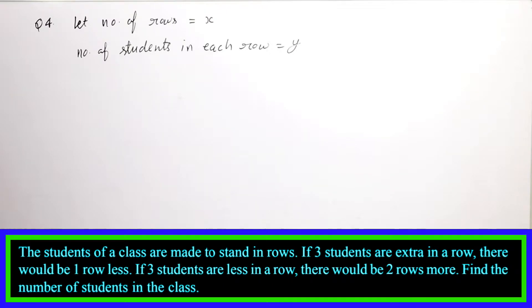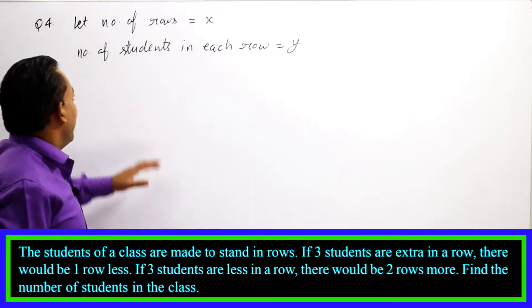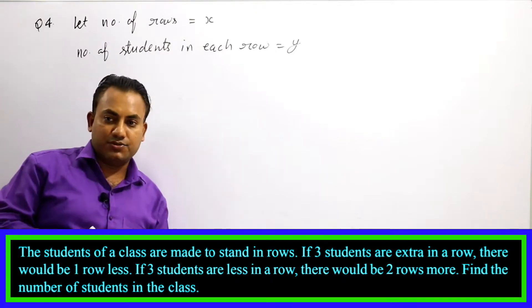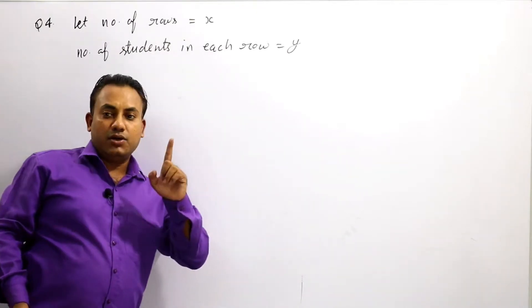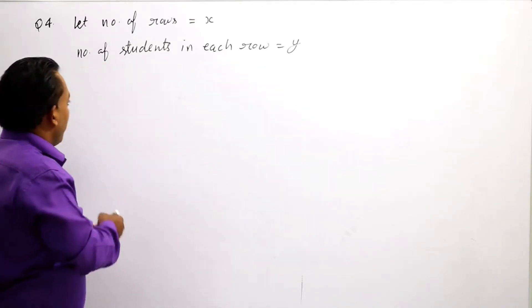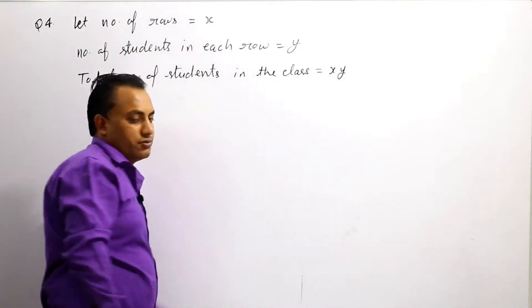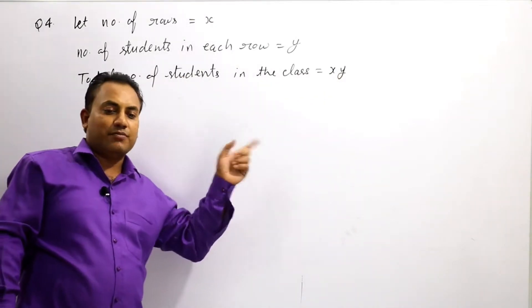तो यहाँ जो समझने वाली बात है, कि आप देख पा रहे हैं कि rows कम हो रही हैं या ज़्यादा हो रही हैं, और उन rows में students को extra किया जा रहा है या less किया जा रहा है। तो हम मानेंगे: let number of rows = x, and number of students in each row = y. Then total number of students in the class = x × y.